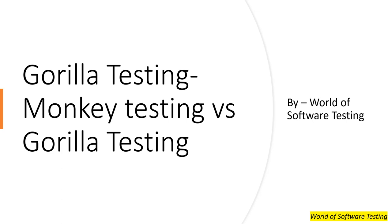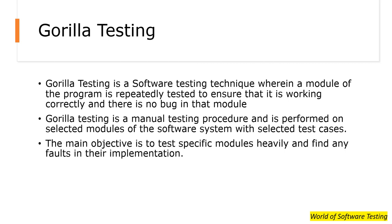Most people get confused with the terminologies monkey testing and gorilla testing, but there is a difference between these two. Gorilla testing is a software testing technique wherein a module of a program is repeatedly tested to ensure it is working correctly and there is no bug in that module. It is a manual testing procedure performed on selected modules of the system with selected test cases. The main objective of gorilla testing is to test specific modules heavily and find any faults in their implementation.